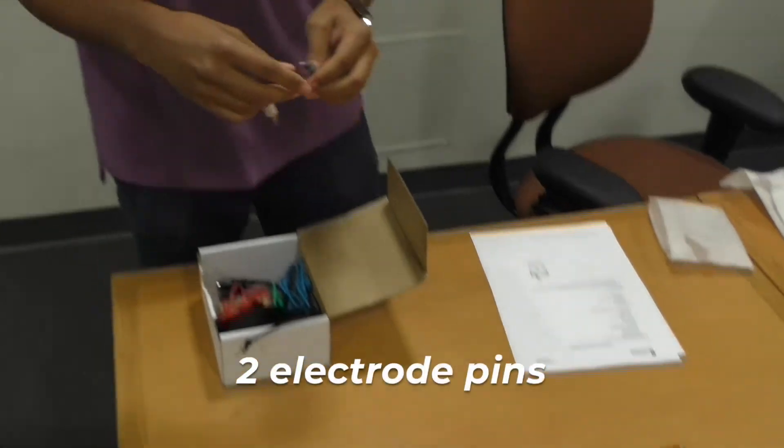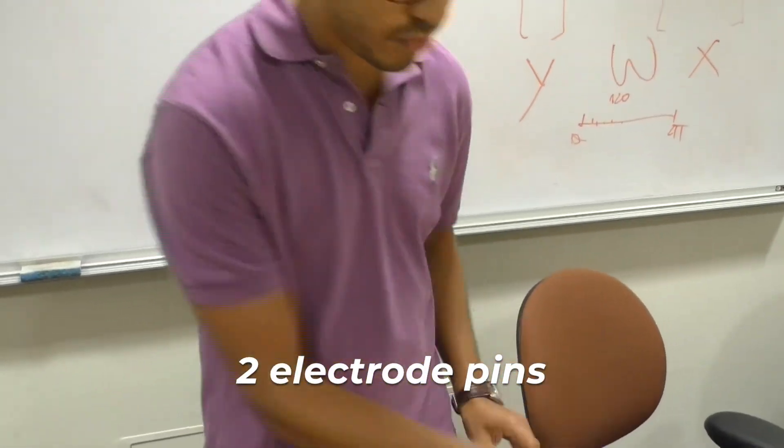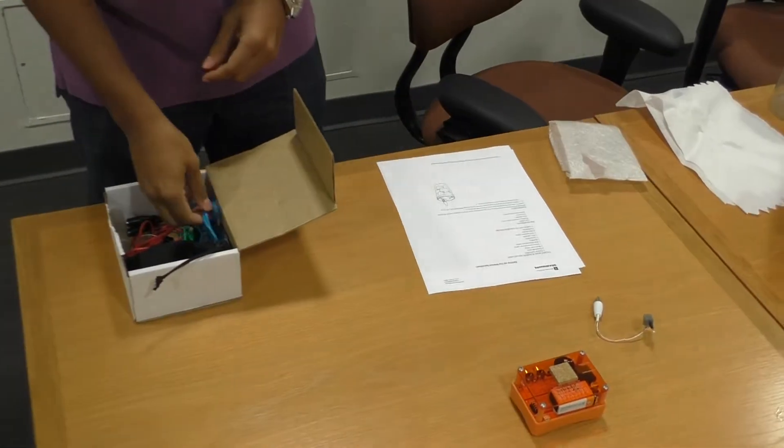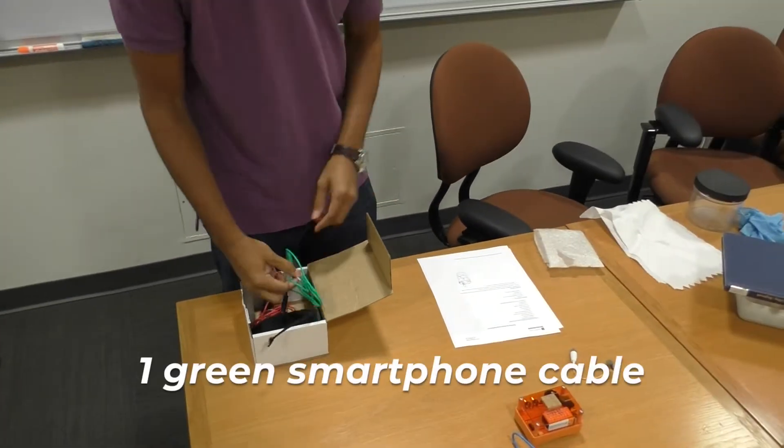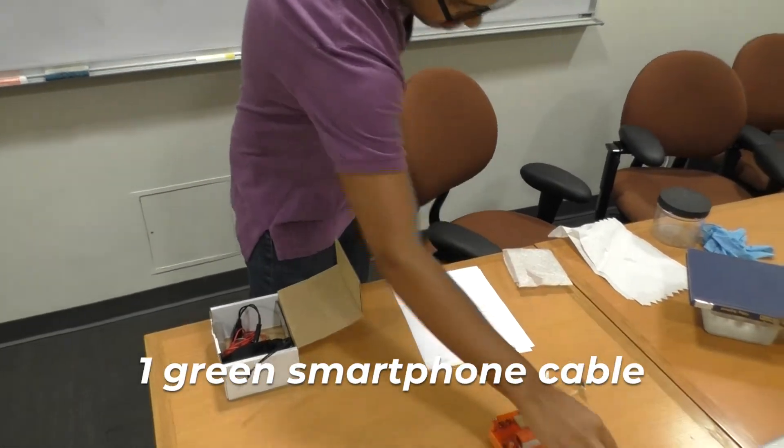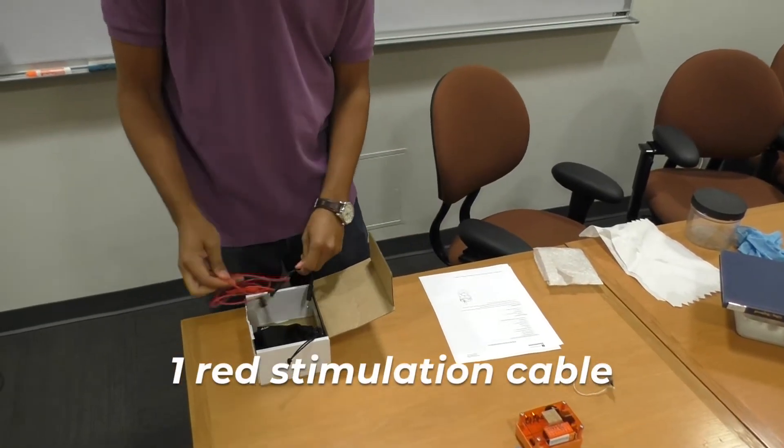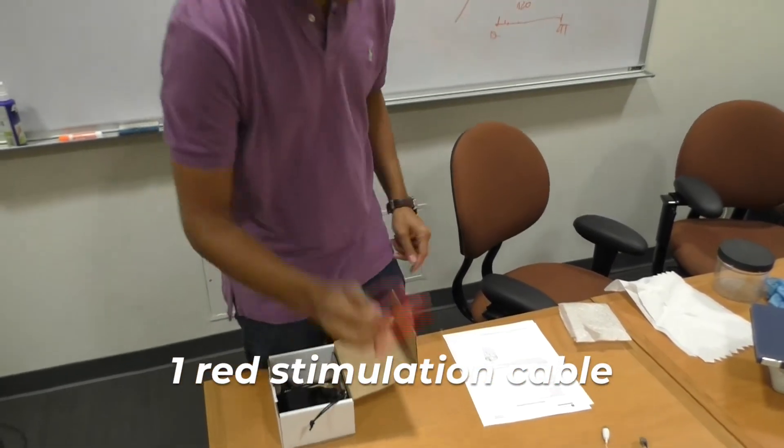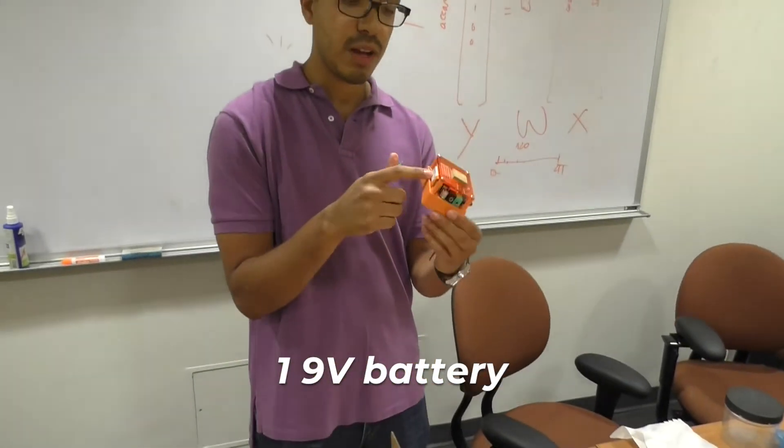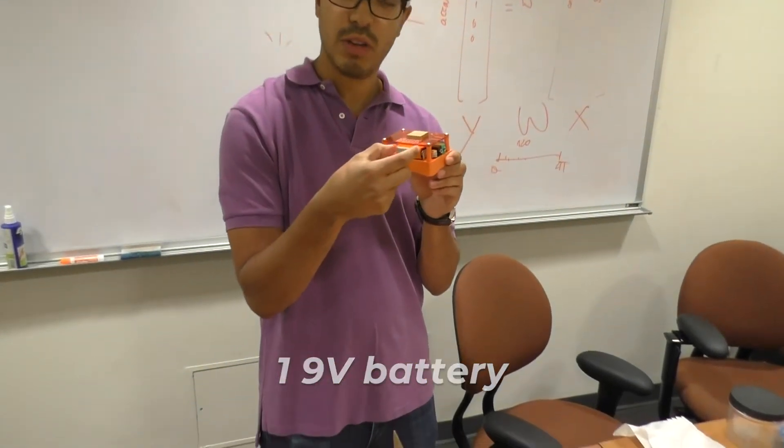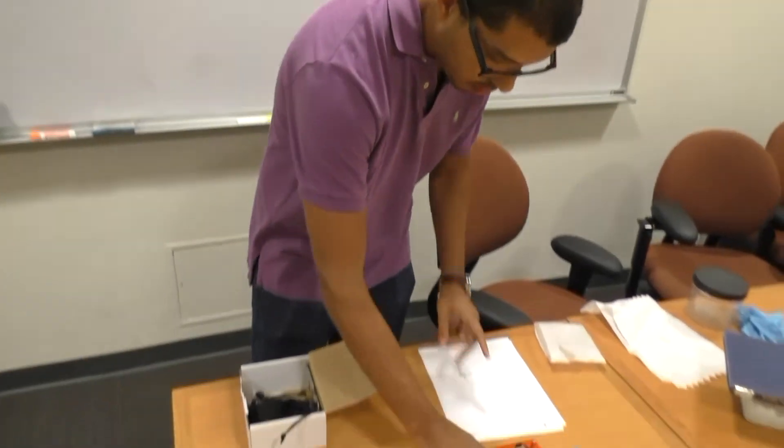Two electrode pins, a blue USB cable, a green smartphone cable, one red stimulation cable, a battery which should be in your SpykerBox. If it's not in your SpykerBox, make sure to insert it right there, right in the back of it.